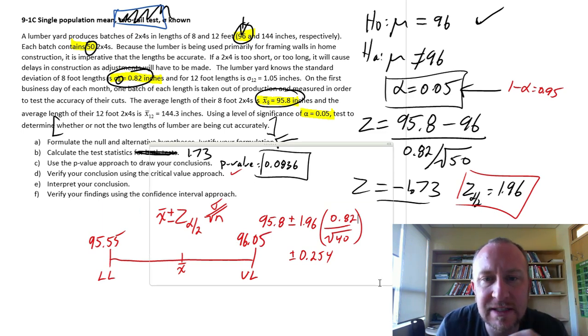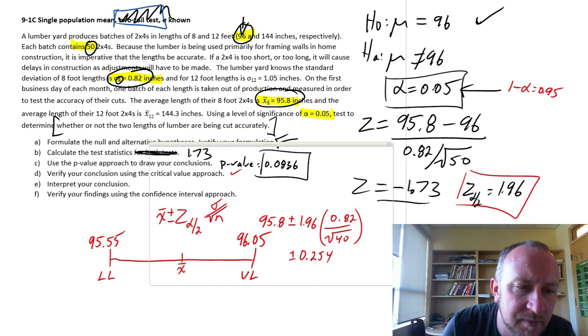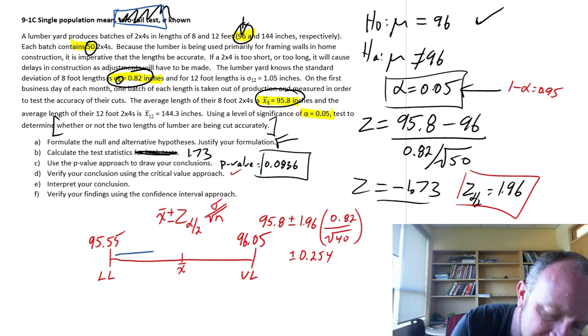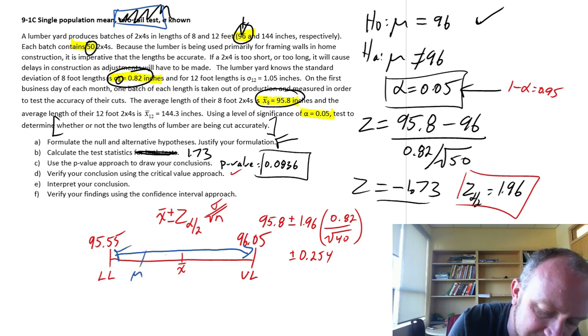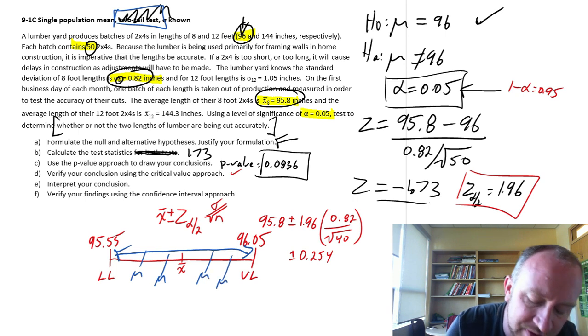Okay. So now what we can say is, I'm 95% confident that the true population mean exists between these two limits. I don't know where it is, but I'm 95% confident that it's somewhere in there.